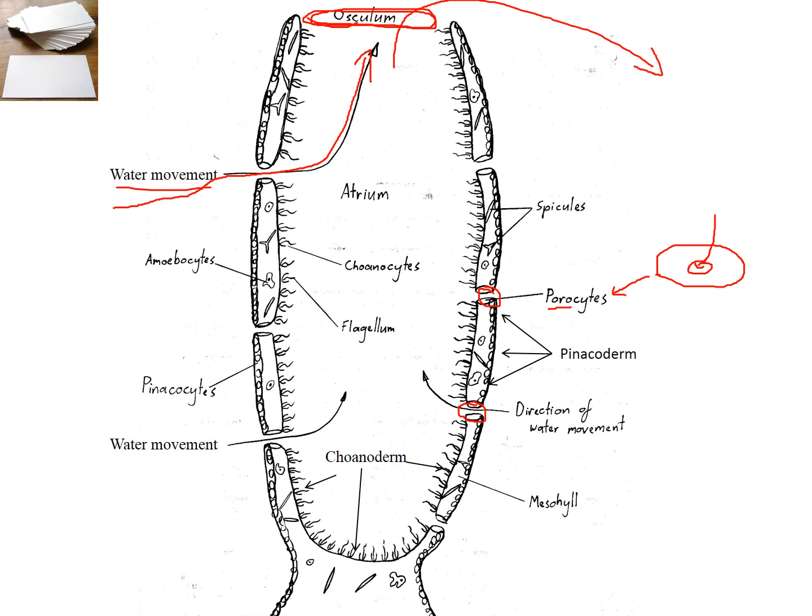Now, poro means hole and cyte means cell. And those two roots are something that you should learn. So where does the water go out? It goes out through something called the osculum.